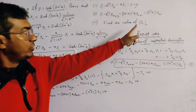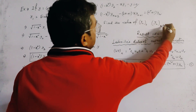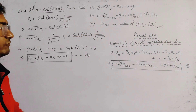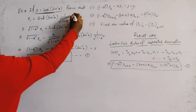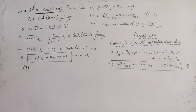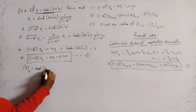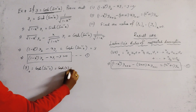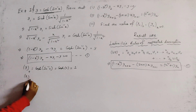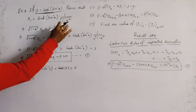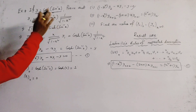Now we find the value of yₙ at x equals 0. Putting x equal to 0 in the original function: y(0) equals cosh(sin⁻¹ 0) equals cosh(0) equals 1. For the first derivative at x equals 0: y₁(0) equals sinh(sin⁻¹ 0) times 1 over root(1 minus 0), which is sinh(0) equals 0.